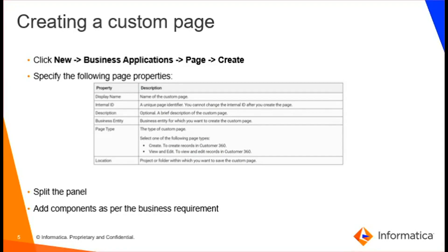Then we will provide the properties: the display name, internal ID, description, business entity, and page type. There are two types: either create page, or view or edit page. A create page is needed to create records in customer 360, while view and edit is used to view and edit the records in customer 360. Then we select the location — the project or folder within which you want to save the custom page — and then we click on OK.